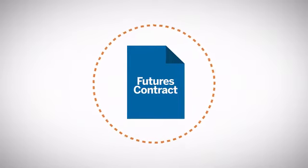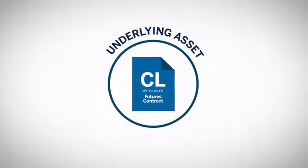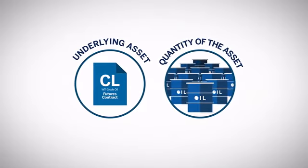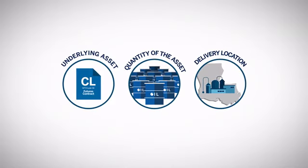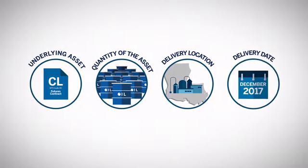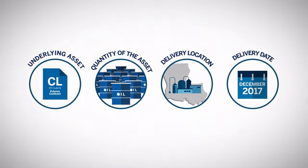Every futures contract has these four attributes: the underlying asset, for example light sweet crude oil; the quantity of the asset, for example a thousand barrels; delivery location, for example the Henry Hub in Erath, Louisiana; and delivery date, for example December 2017.